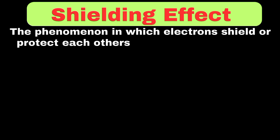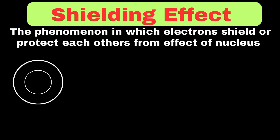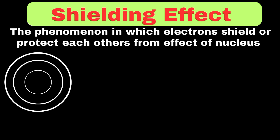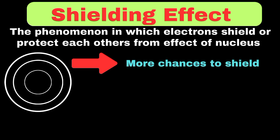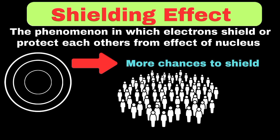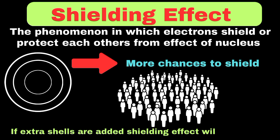Now we should move towards the shielding effect. The shielding effect is the phenomenon in which electrons shield or protect each other from the effect of the nucleus. If extra shells keep increasing, it means there are more chances for inner electrons to shield outer electrons. To clearly understand this concept, assume there are many people in the same place — you might face difficulties seeing what's next to you because the person next to you is blocking the main view. Similarly, if extra shells are being added, the shielding effect will increase. However, if extra shells remain the same, the shielding effect will also remain the same.